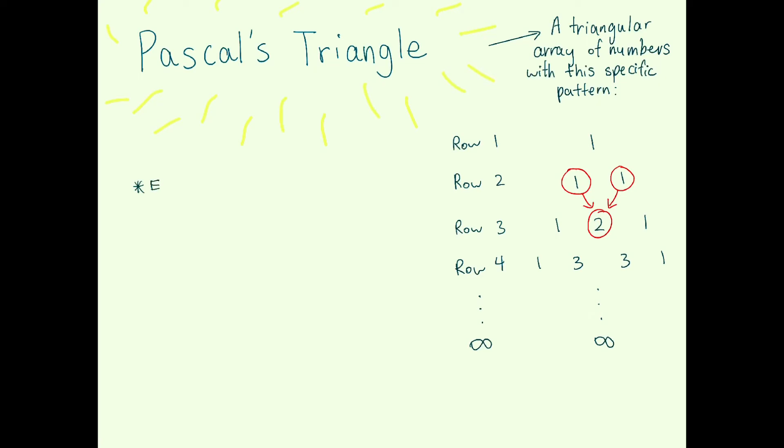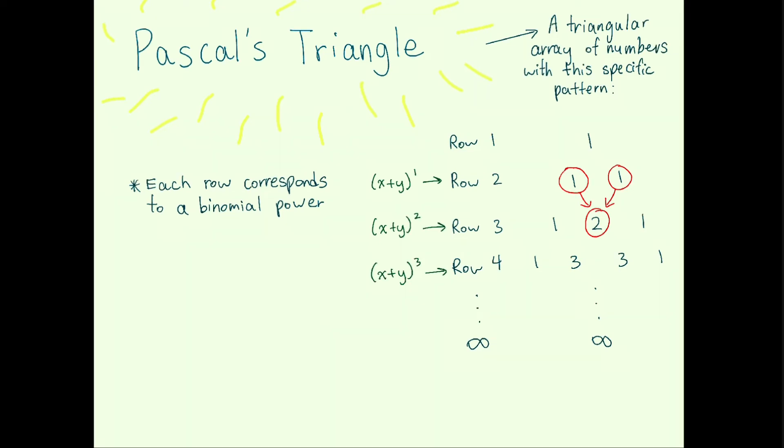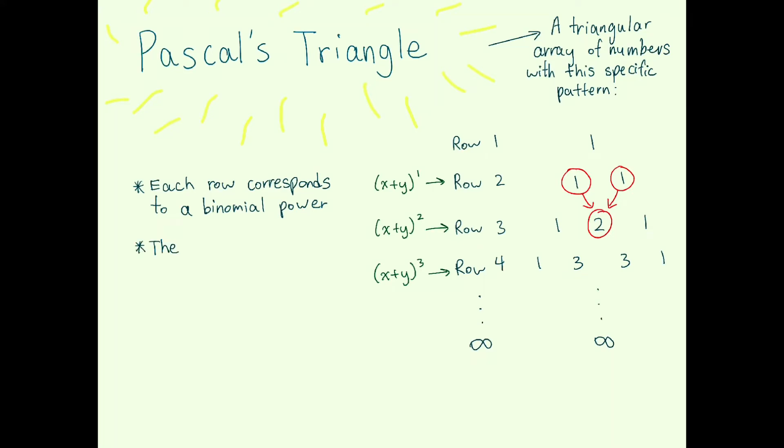So how does this relate to binomials? The pattern is that each row corresponds to a binomial power, with x plus y to the power of 1 corresponding to row 2, x plus y squared corresponding to row 3, and so on. The numbers in each row are the coefficients of the corresponding binomial's expanded form.